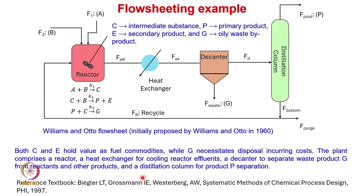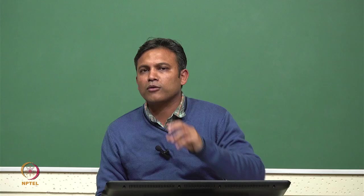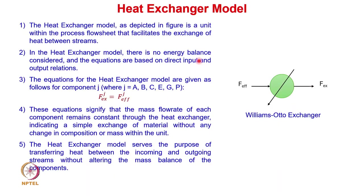Now let us move to the heat exchanger, the next unit in the process flow sheet. The heat exchanger facilitates the exchange of heat between streams: the hot product stream from the reactor is cooled down. The heat balance is simply: heat lost by the effluent equals heat gained by the coolant flowing through the heat exchanger.